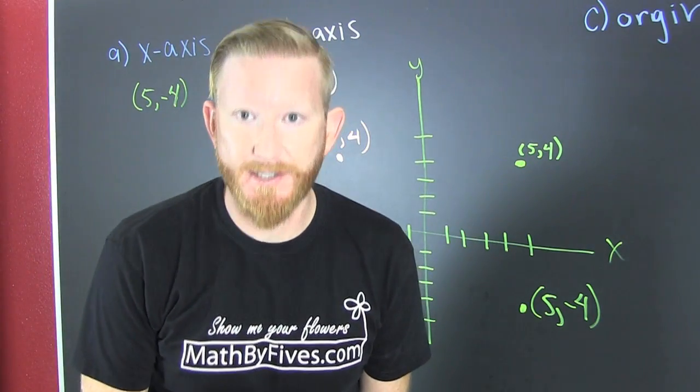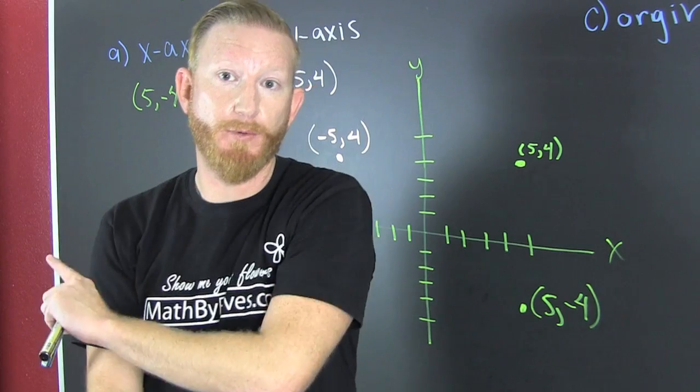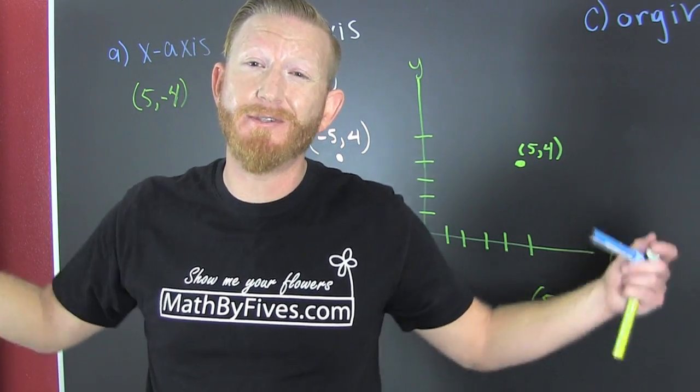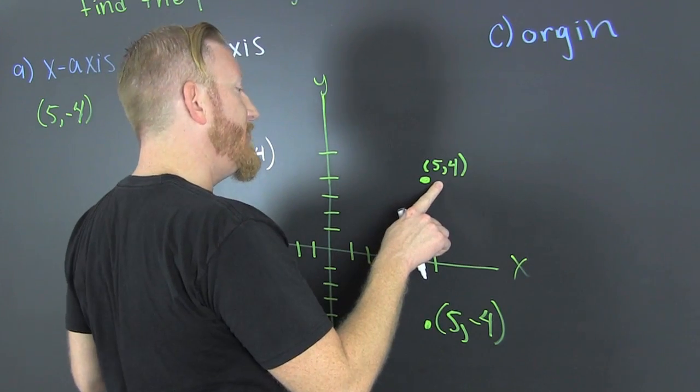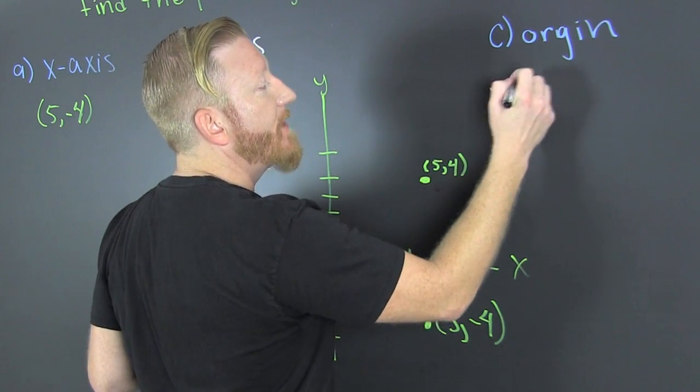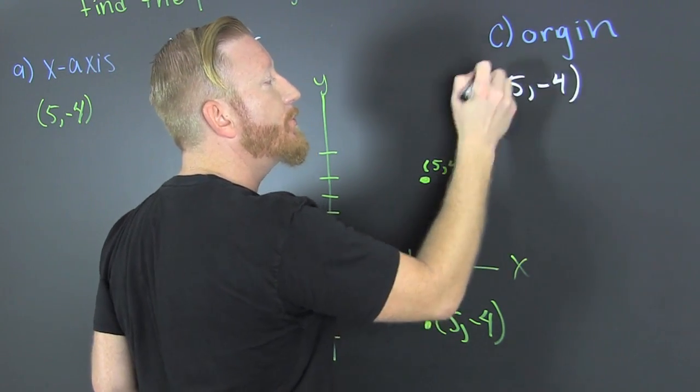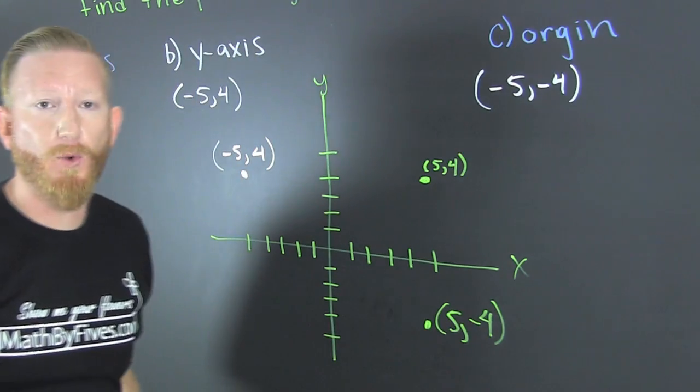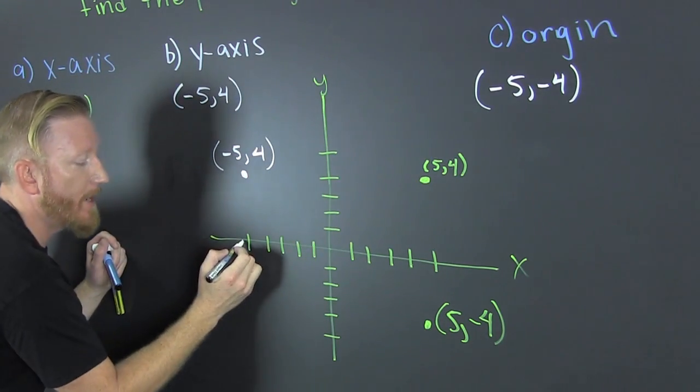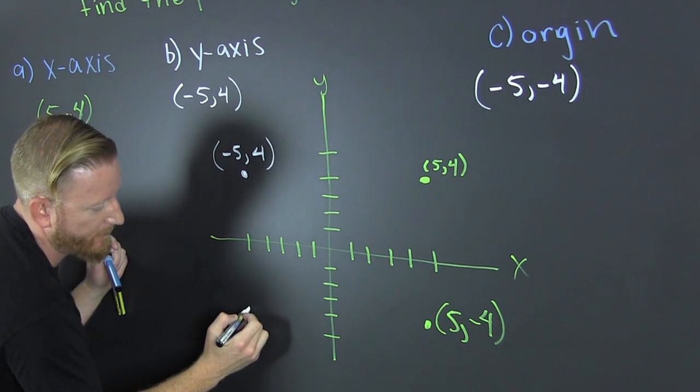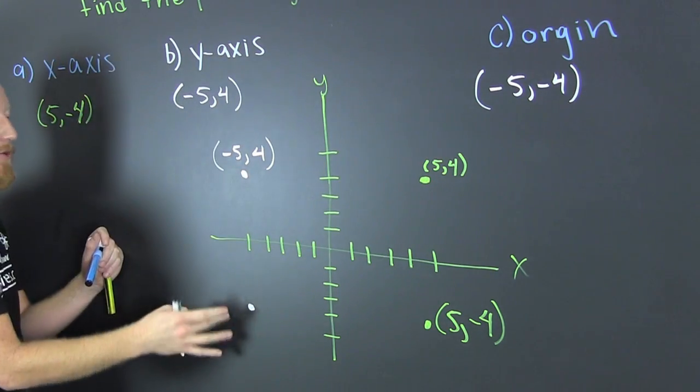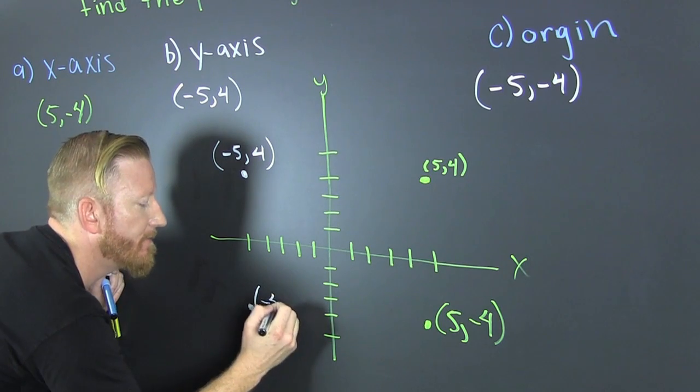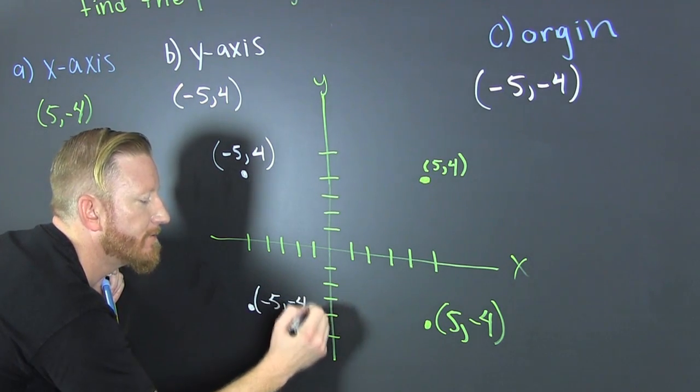So now we're looking for origin symmetry. We reflect across y, then we reflect across x, meaning it's opposite of both. So if I'm looking for origin symmetry for this guy, that's going to be a minus 5 and a minus 4, sure. Because they change both the x's and the y's for origin symmetry. So that's minus 5, minus 4. So that same point reflected across the y and then across the x is minus 5, minus 4.